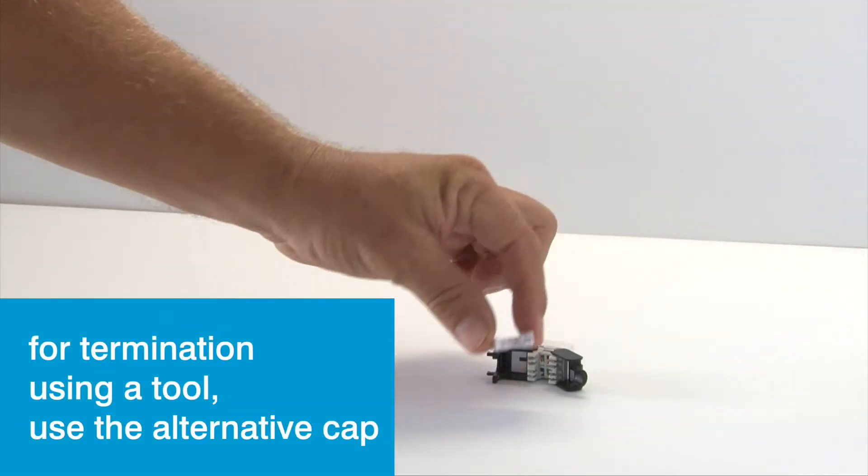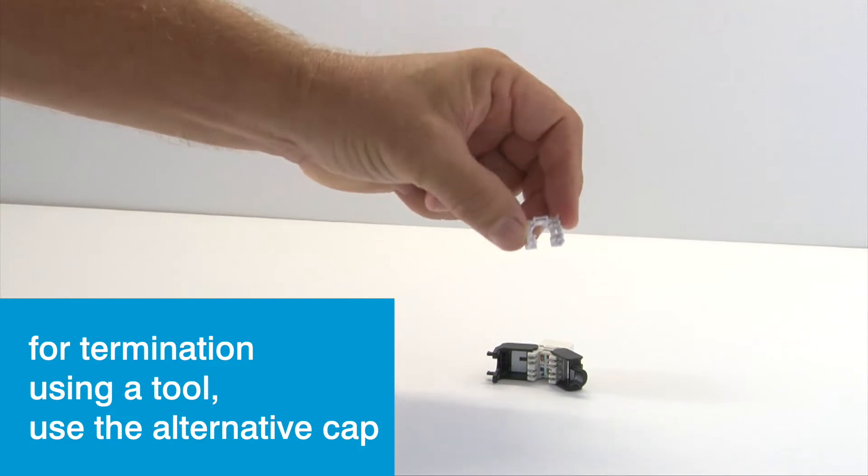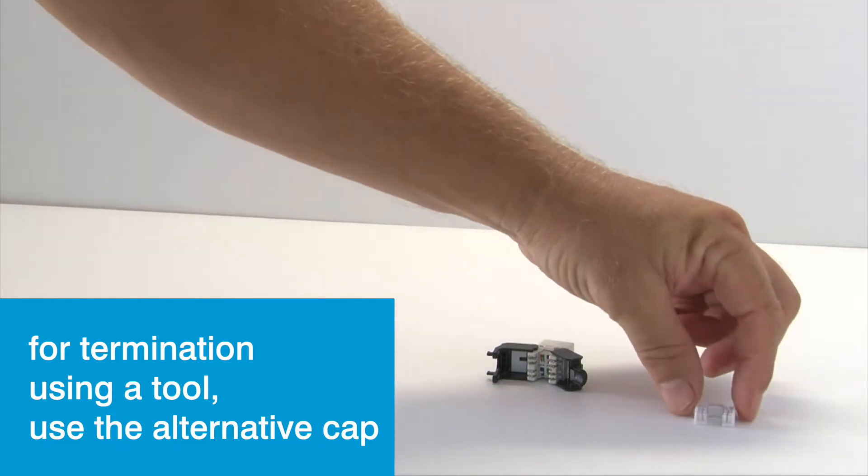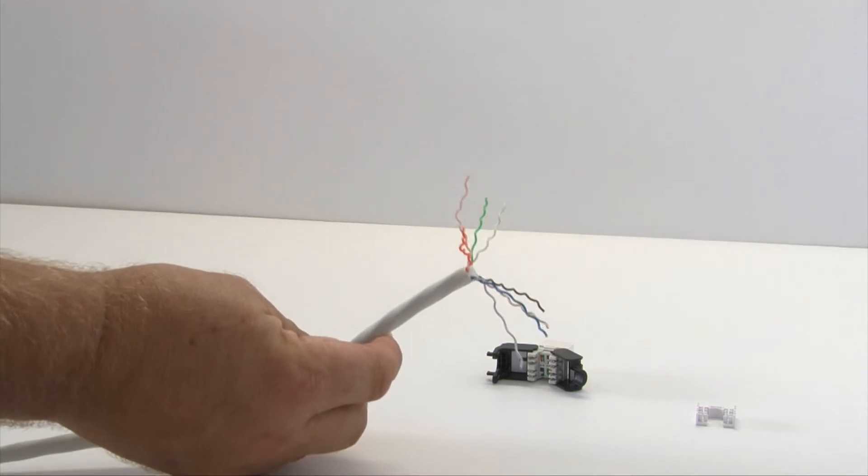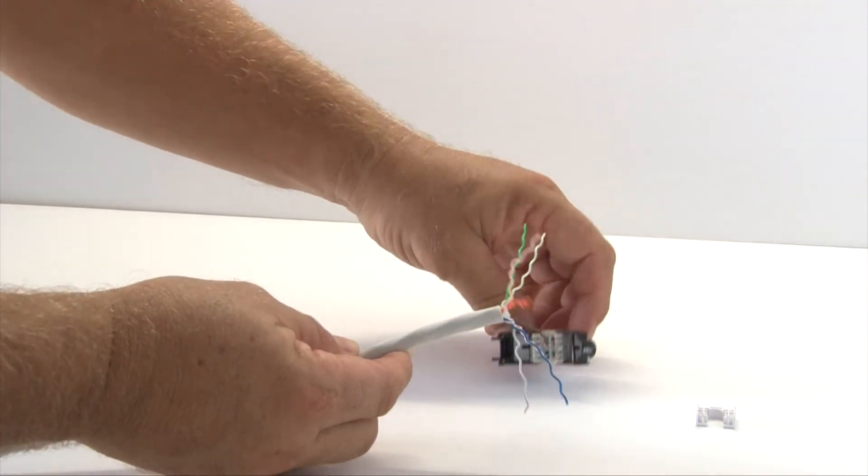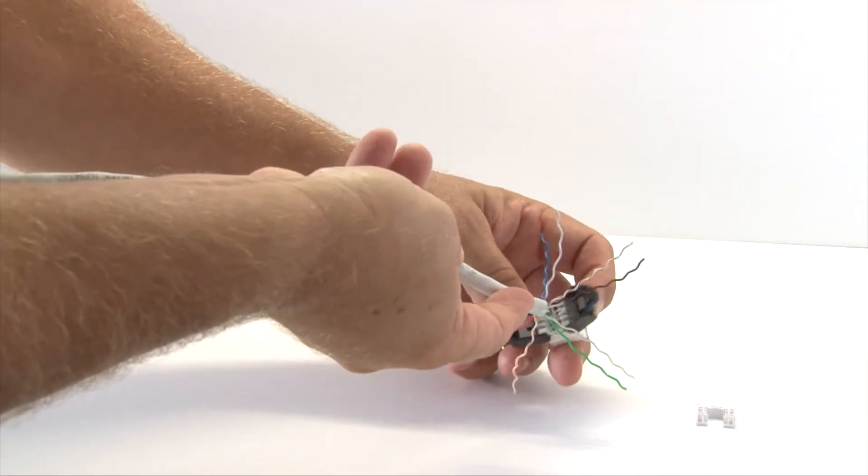If you are going to use a multi-tool or 110 tool to terminate, use the alternative cap. You've already prepared the cable by trimming the central separator and untwisting each of the pairs.